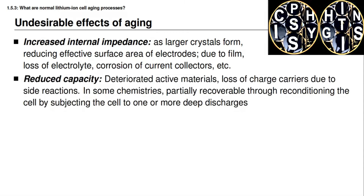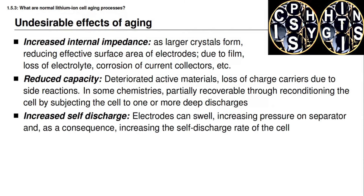A second undesirable effect is reduced capacity. When the active materials disintegrate or deteriorate, they lose vacancies that could have held lithium, or we lose charge carriers from the electrolyte when side reactions occur. In some battery chemistries this is partially recoverable through reconditioning using deep discharges, but this is not the case in most lithium-ion chemistries. A third effect is an increased rate of self-discharge. As electrodes swell, that increases pressure on the separator, decreasing its resistance and leading to increased self-discharge rates.